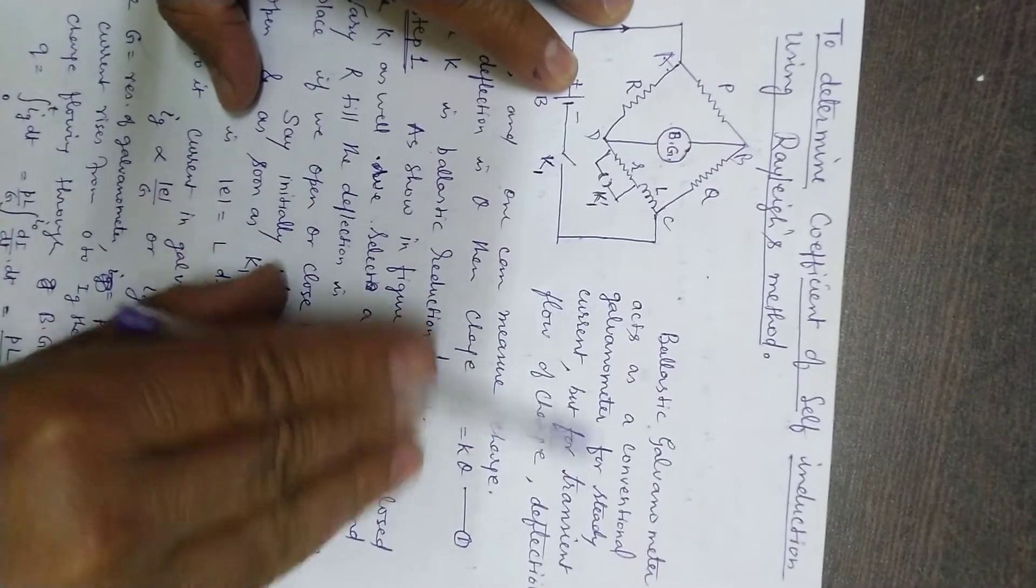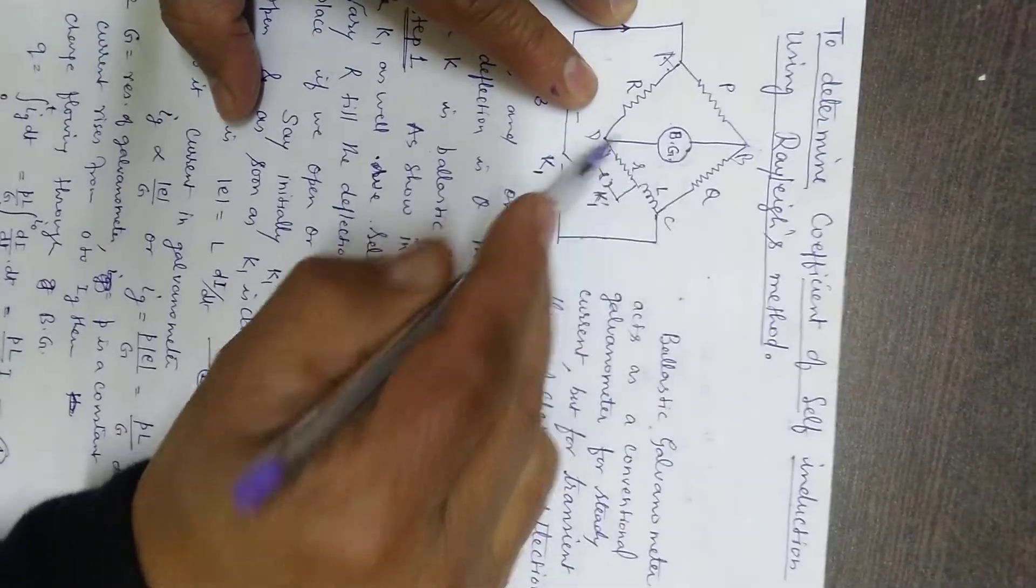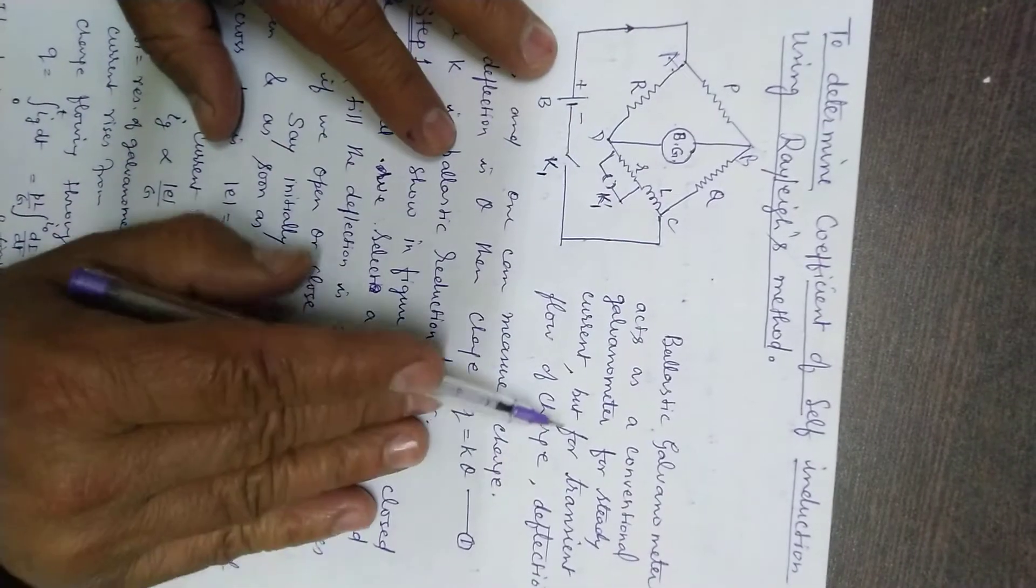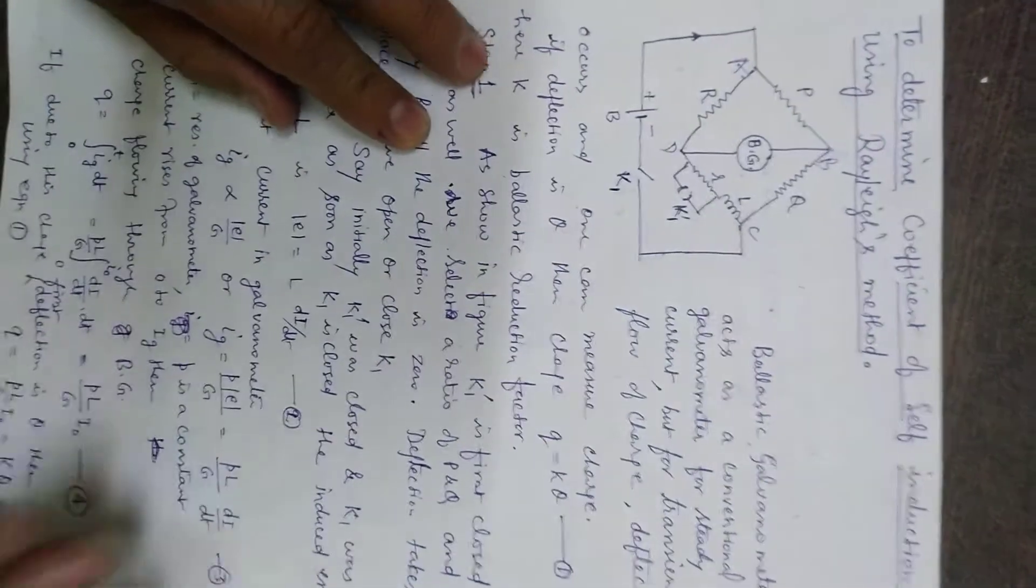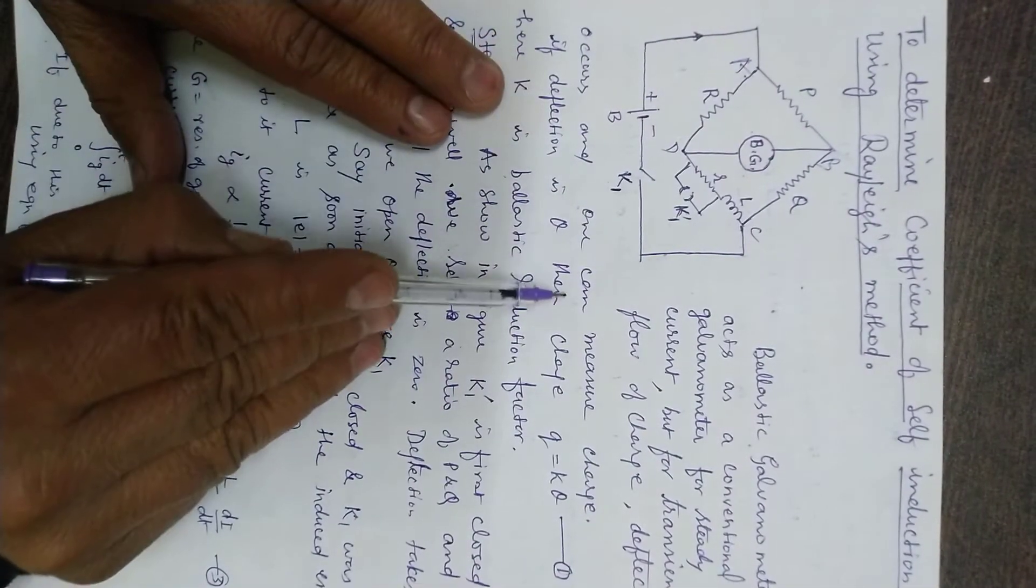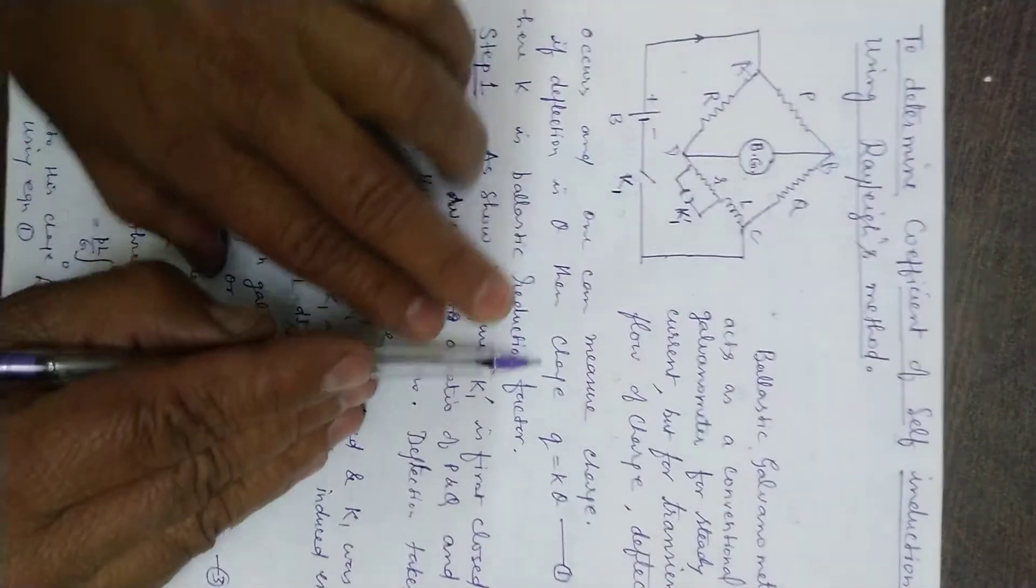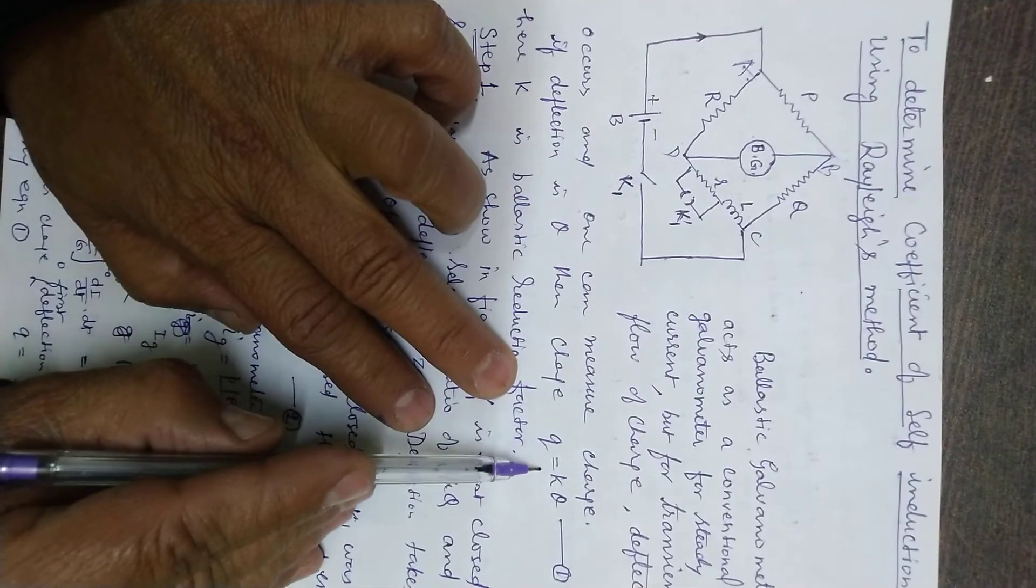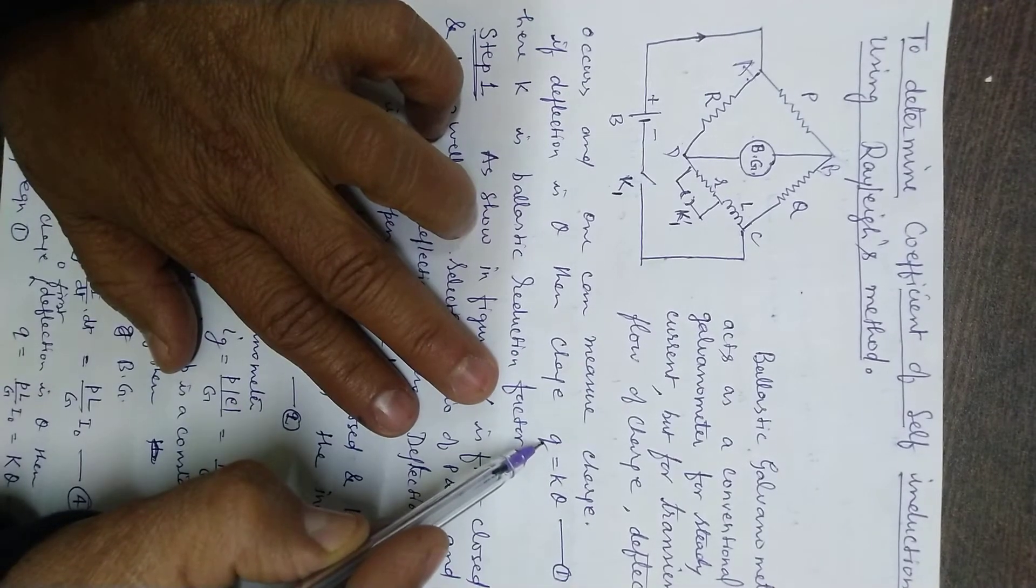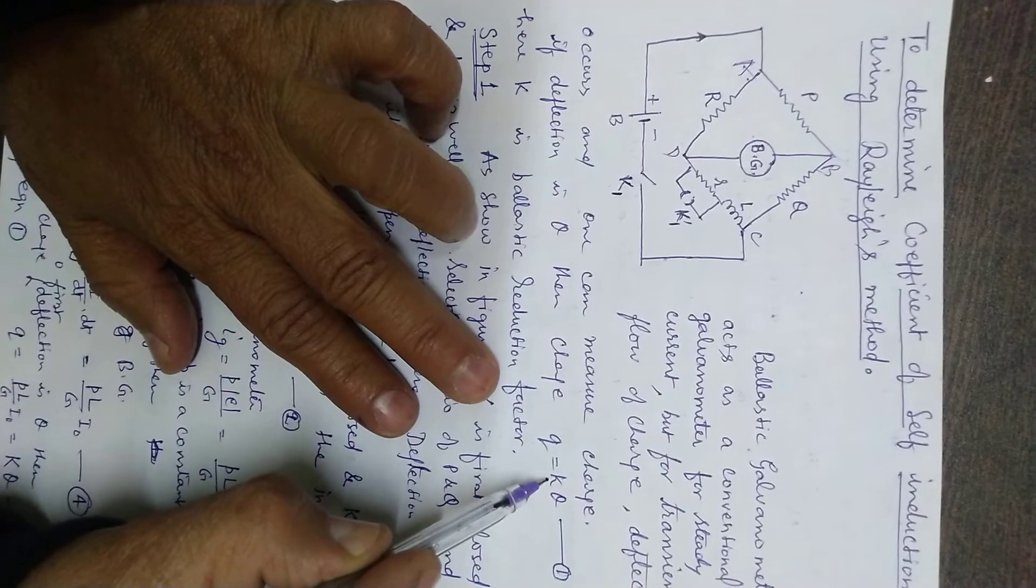This galvanometer is replaced by a ballistic galvanometer. Ballistic galvanometer acts as a conventional galvanometer for a steady current. If the current through the galvanometer is constant, steady means constant, then the deflection simply is obtained. But for transient flow of charge, deflection occurs and one can measure charge. If the deflection is theta, then charge is written q equals k times theta.